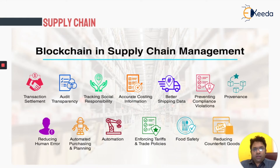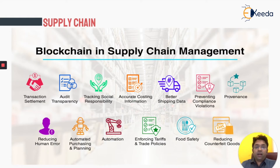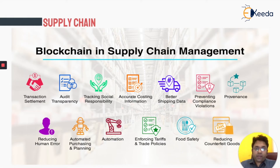Consider a single transaction: you have the supplier who provides the goods, a bank which provides a letter of credit, a bill of lading, port authorities, customs authorities, the shipper, port authorities in Africa, port authorities in Sri Lanka, and port authorities at the destination. In India also we have port authorities and customs for clearance — all of these parties come into a single network called the blockchain.